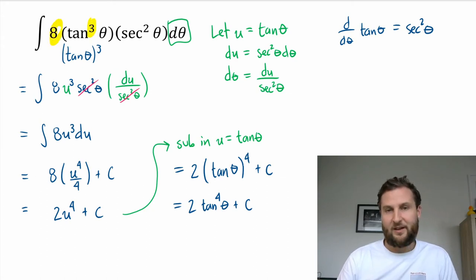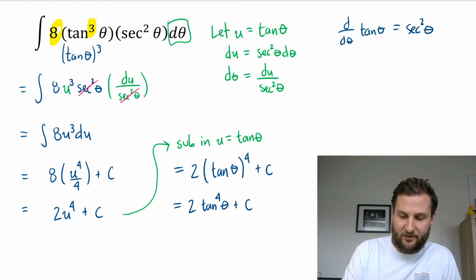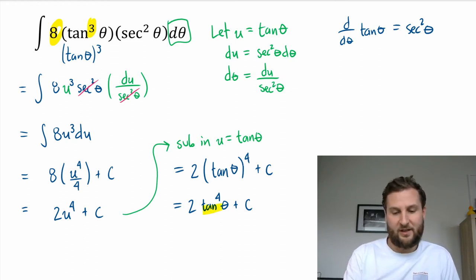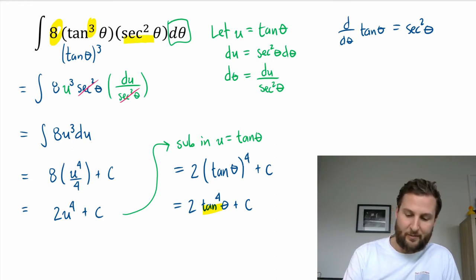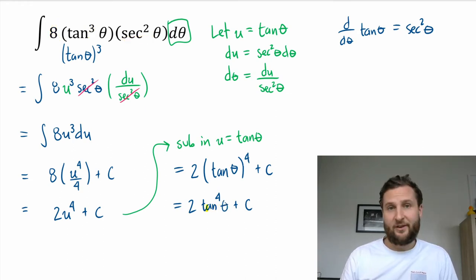So then we have 4 tan theta cubed and so that's where we get the 8 and that's also where we get the cubed. And then your chain rule would say the derivative just of tangent which would be here, and that would be your secant squared term. So I won't write that down but you can go back and confirm that those are equivalent.